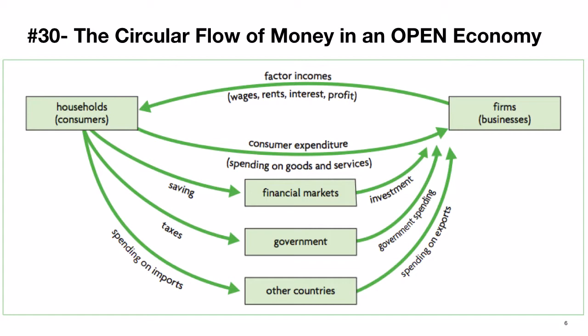The leakages are things that are taken out of that circular flow model. If you look on the left-hand side, you see things coming out of household income: savings, taxes, and spending on imports — all of which get sucked out of the economy. Those are leakages. On the other side, you see investments, government spending, and spending on exports coming back into our domestic economy. Those are important parts of how we're going to measure overall economic activity.